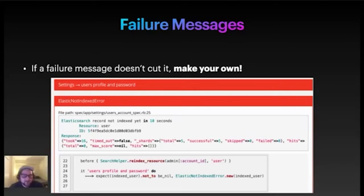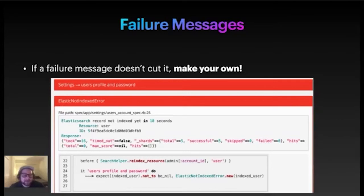If the user is not indexed, it returns this kind of error, and this error is really great because it tells me how long the test waited for the user to be indexed. It tells me what resource it was, gives me the ID of the user it expects to be indexed, and then I can go take that ID and explore my software under test and see what happens. It also shows the raw response from the indexing service. When you make these failure messages, provide as much information as you can and make them actionable so that you can go dig under the hood of your software under test and find out what went wrong.